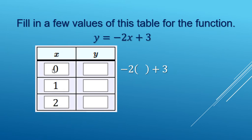So for this row here, the x is a 0. So that's negative 2 times 0 plus 3. Multiply first. 0 plus 3 makes 3.